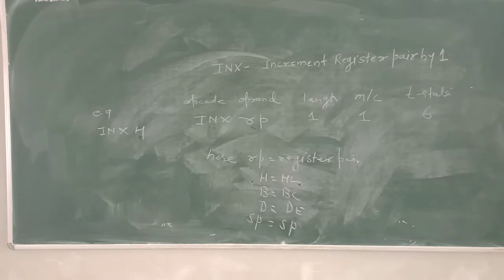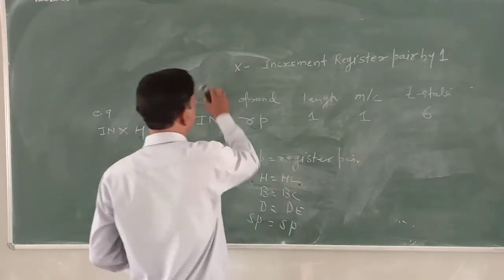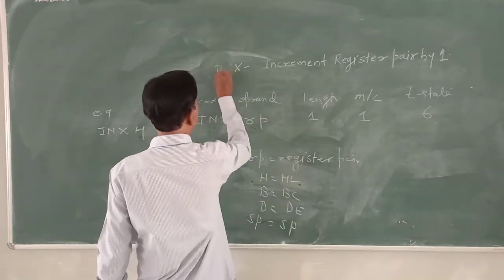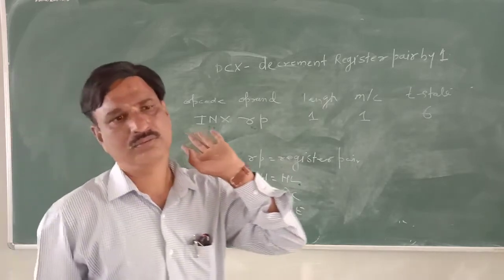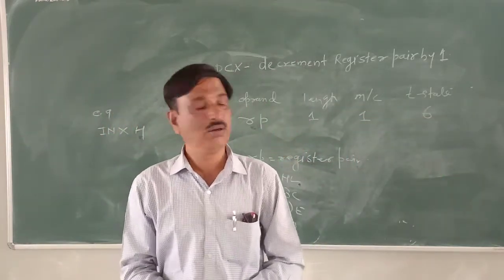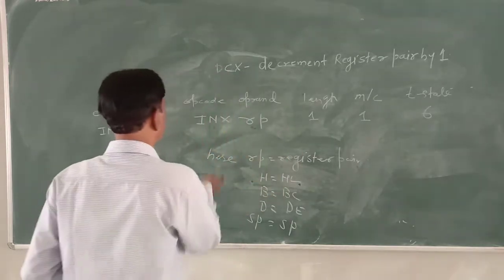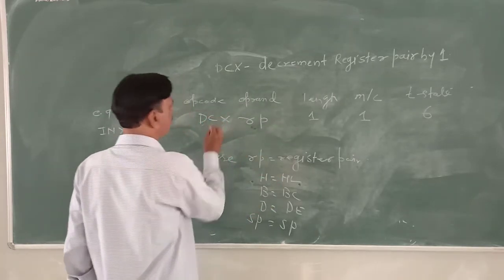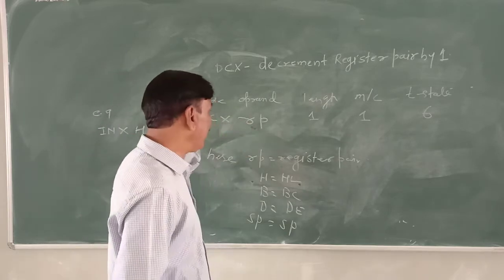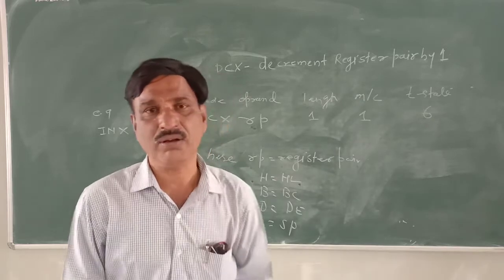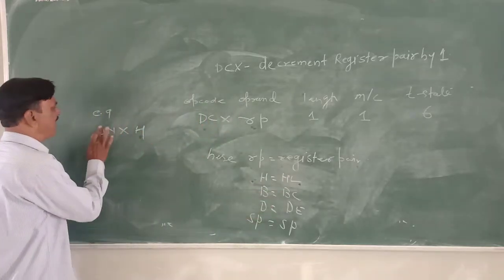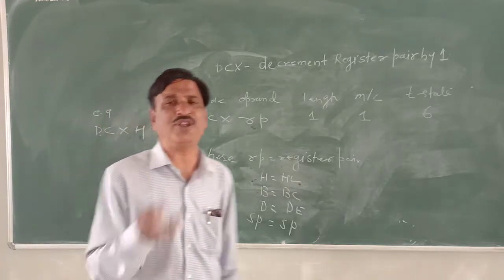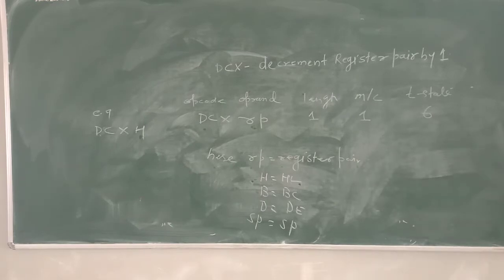After that, the next instruction is DCX — decrement register pair. Just as we can increment, similarly we can decrement. DCX RP decrements the content of the register pair by one. The register pair notation is the same: H for HL, B for BC, D for DE, and SP. For example, DCX H decrements the content of the HL register pair by one — whatever the content was, it will be decremented by one.